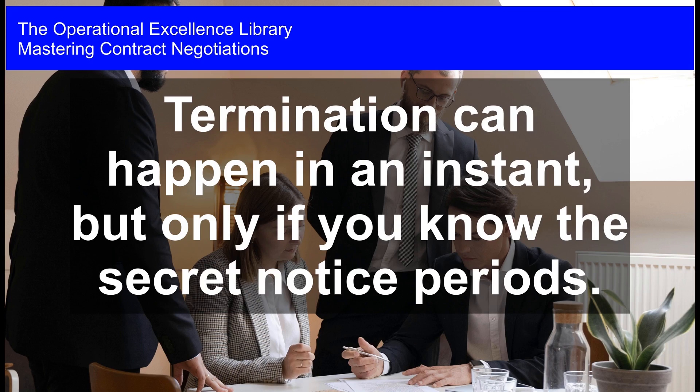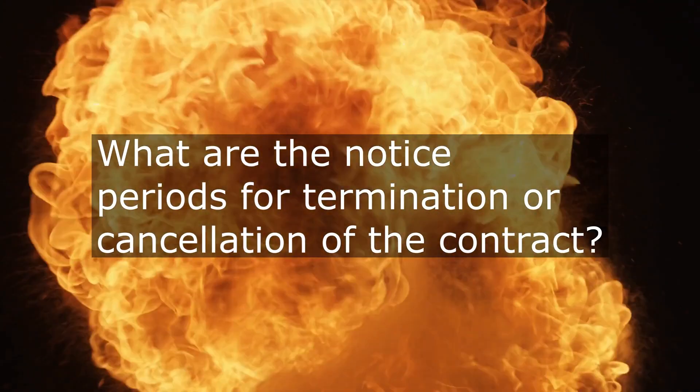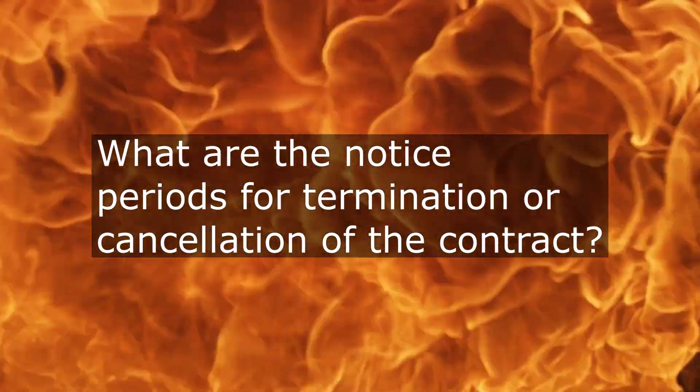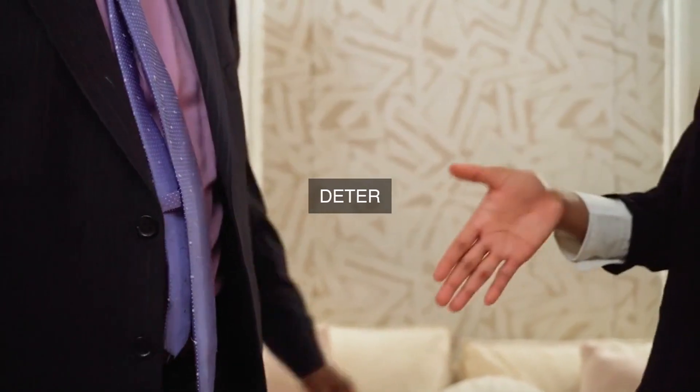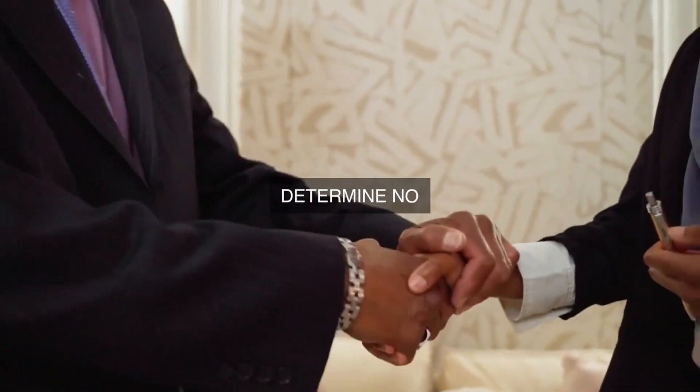Mastering Contract Negotiations. Termination can happen in an instant, but only if you know the secret notice periods. What are the specific notice periods, including the duration and any applicable conditions, that will be required for either party to affect termination or cancellation of the contract?